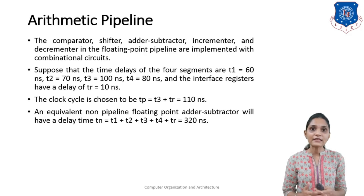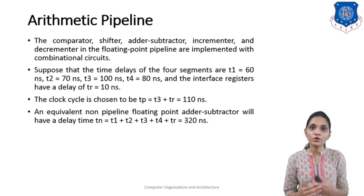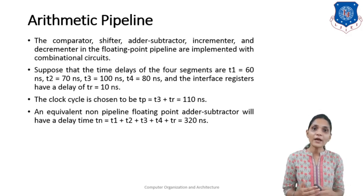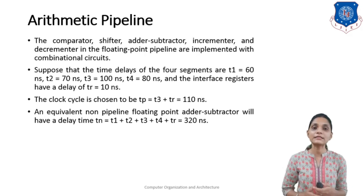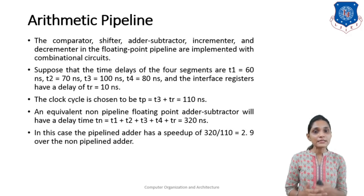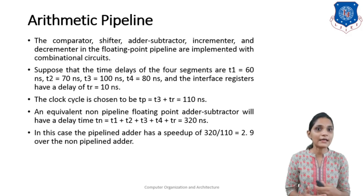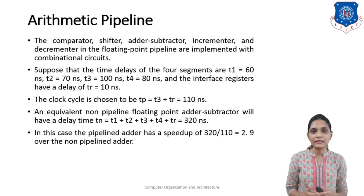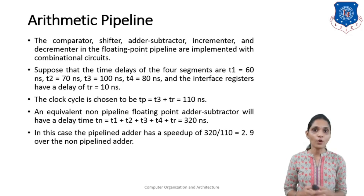For the non-pipelined structure, after 4 clock cycles one task is completed, requiring 320 nanoseconds total. With a pipelined clock cycle of 110 nanoseconds versus 320 nanoseconds for non-pipelined, the speed-up with the pipeline adder is 320 divided by 110, which equals approximately 2.9 — meaning nearly 3 times speed-up over the non-pipelined adder.